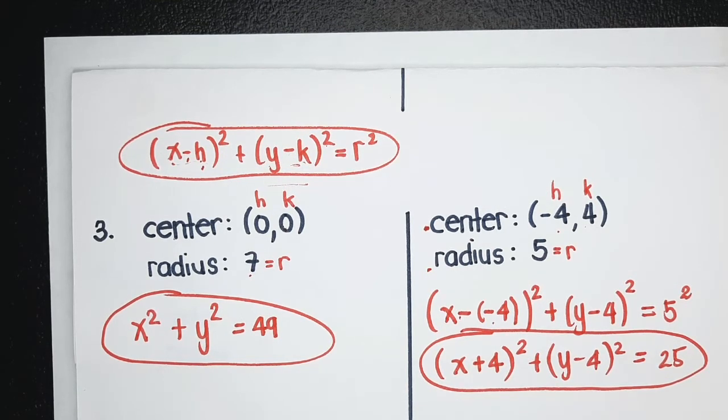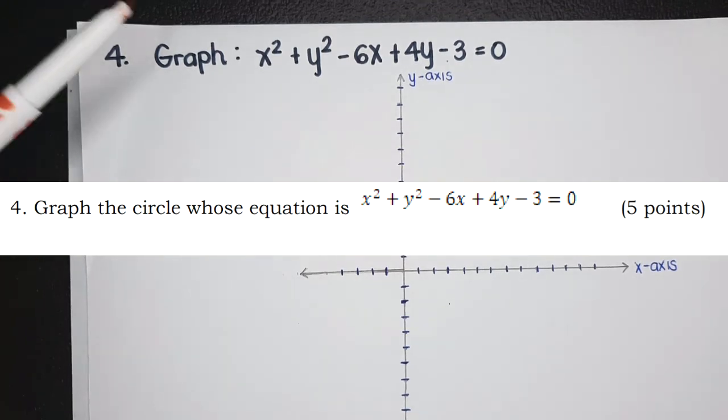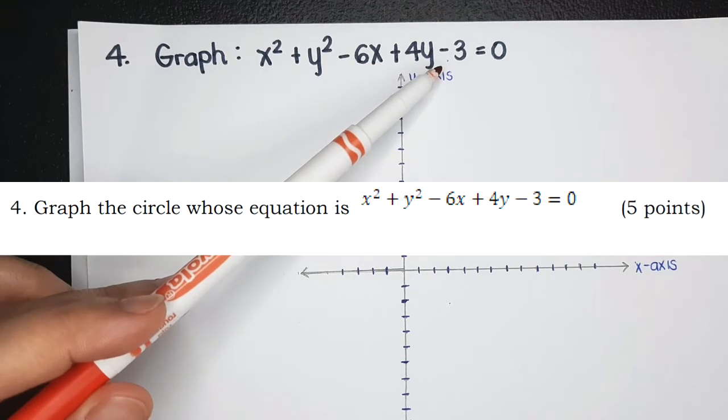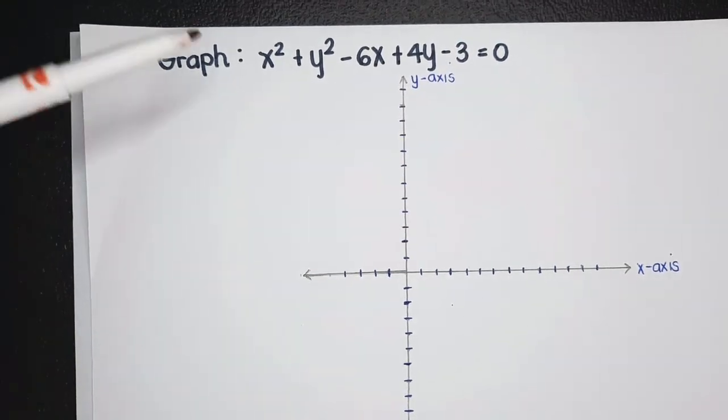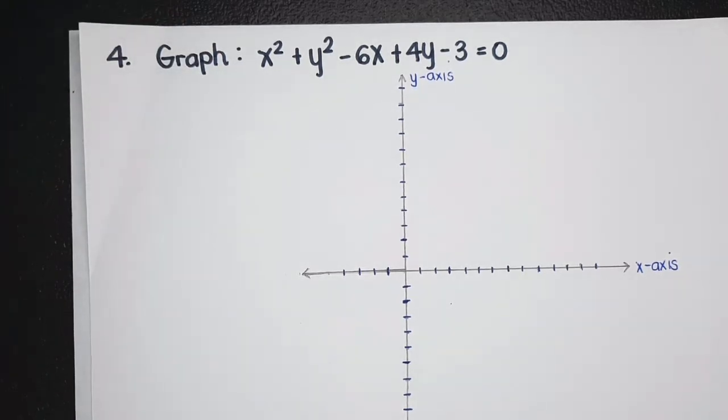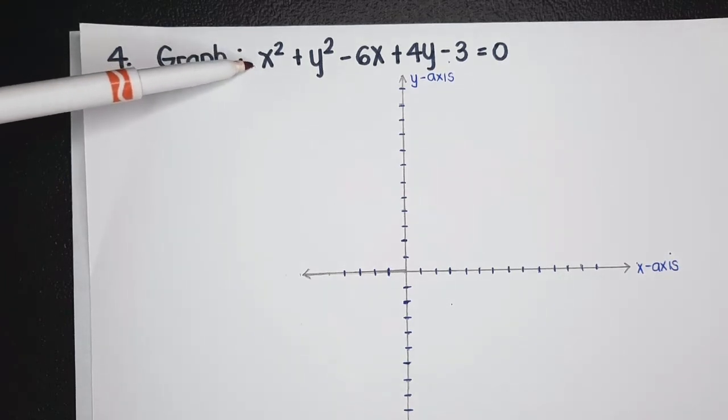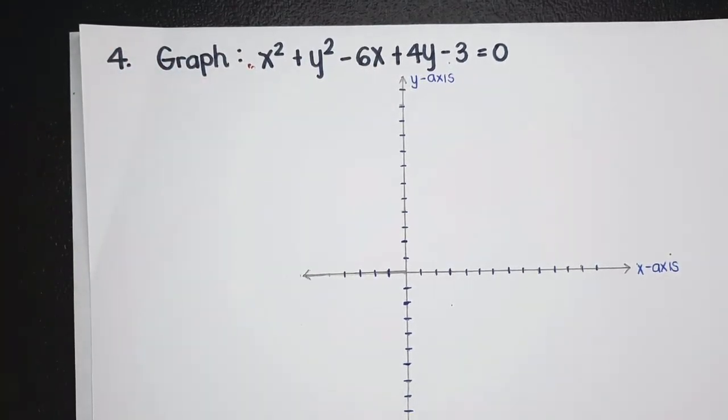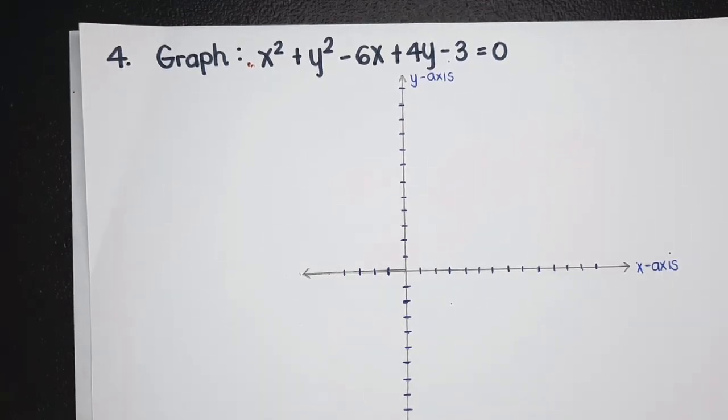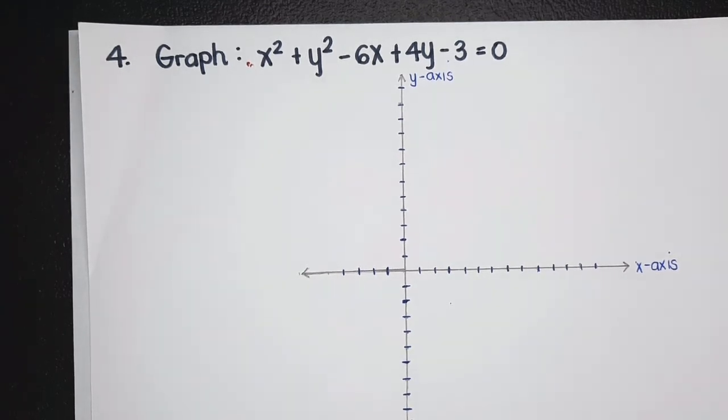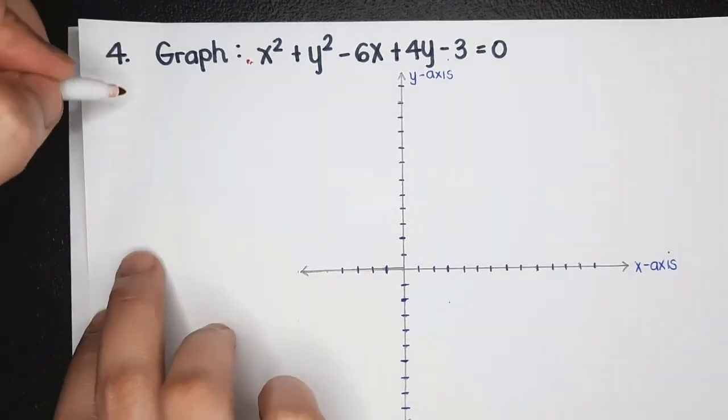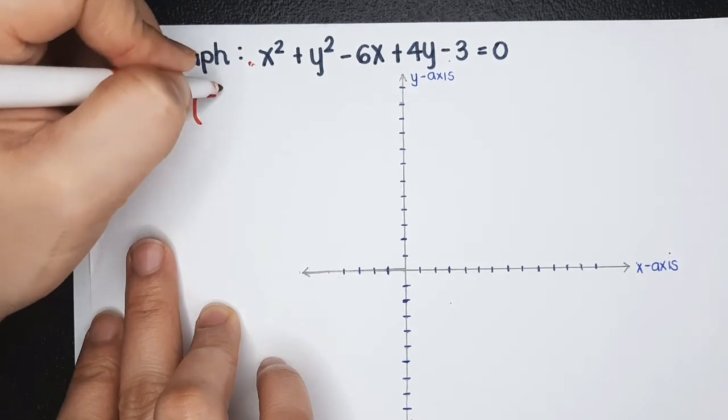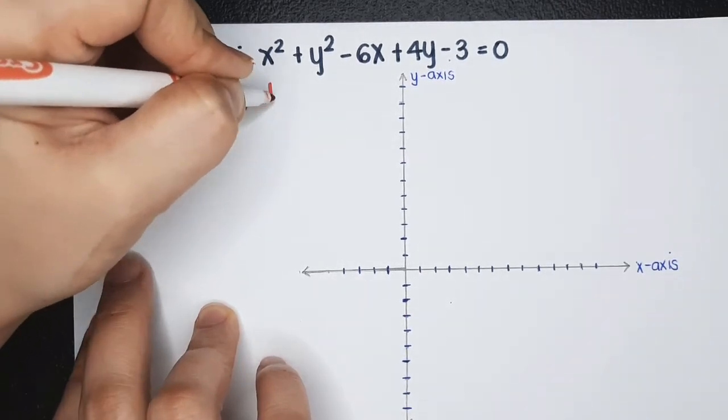Let's have the last item for this exercise. To graph a circle, we need its center and the measure of its radius. If you have a general form of the equation, you may want to transform this to its standard form by completing the square. For this number, I'm going to use the formula because I just need the center and the radius. So, why not use the formula?